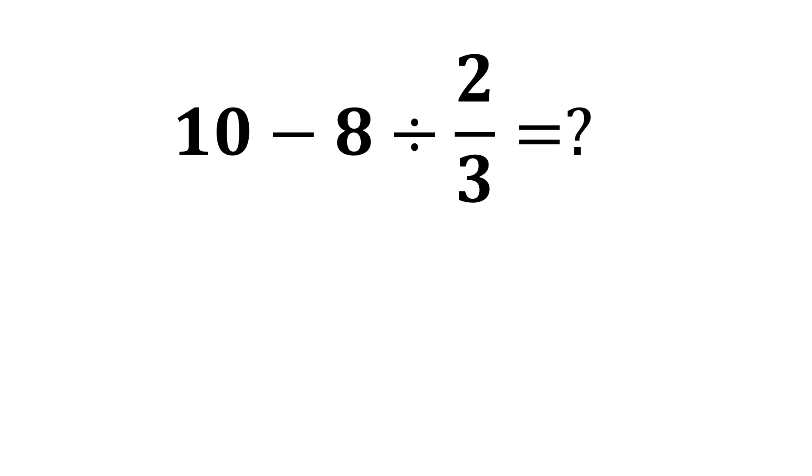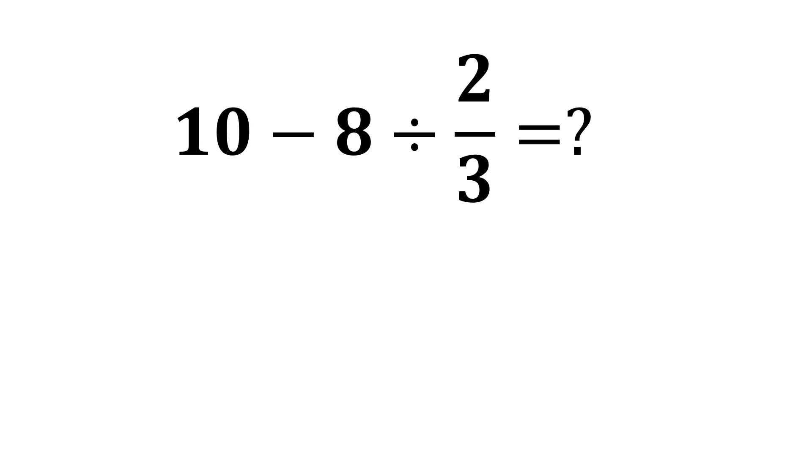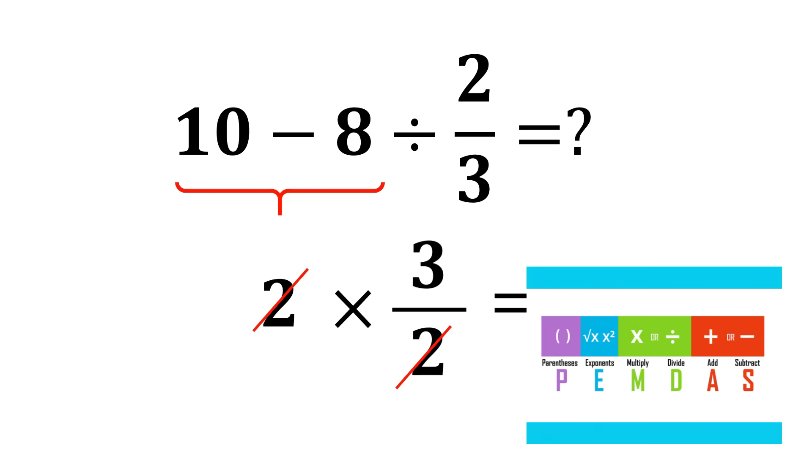Let's see exactly how this works with an expression that looks simple but is surprisingly deceptive: 10 minus 8 divided by 2/3. Many people rush into subtraction first—10 minus 8 equals 2—then they try to deal with the fraction and end up with the wrong answer, usually 3. But according to PEMDAS, subtraction comes after multiplication and division, so we must solve the division first.